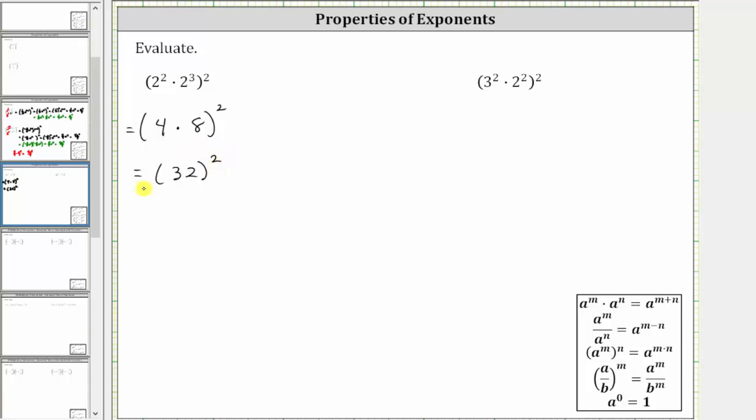The square of 32 is equal to 32 times 32, which is equal to 1024.